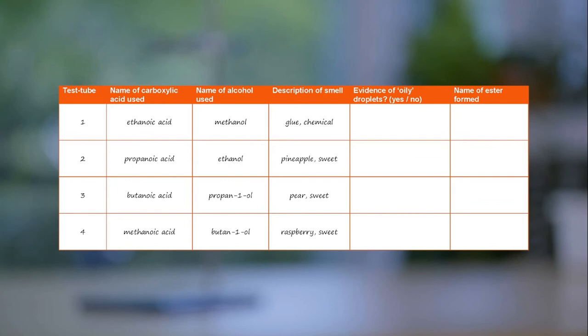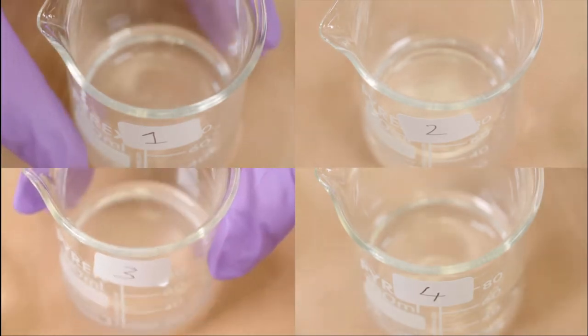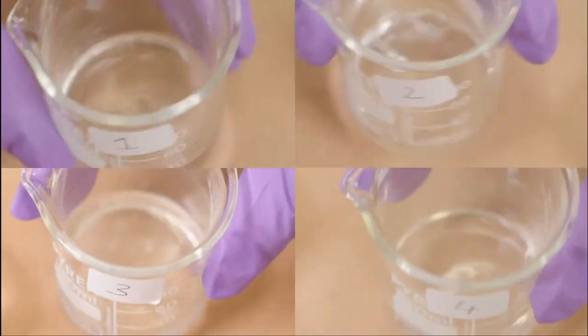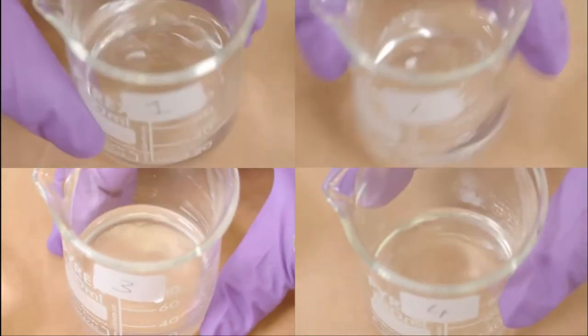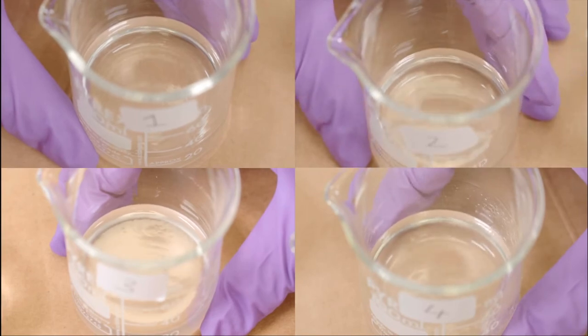The results are recorded in the results table. Esters can also be identified by the presence of oily droplets floating on the surface. The beaker may need to be gently swirled in order to observe these oily droplets. Any observations are recorded in the results table.